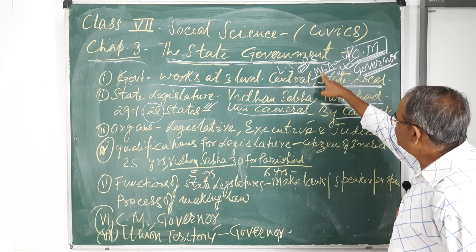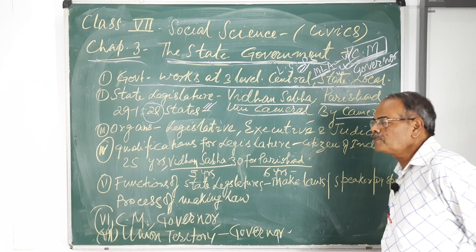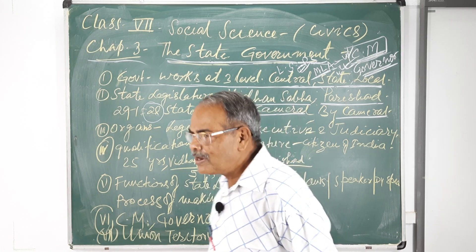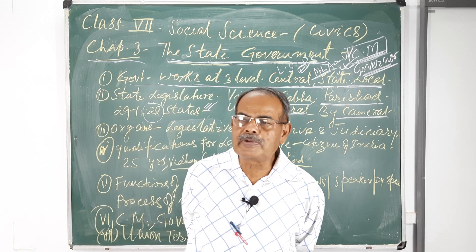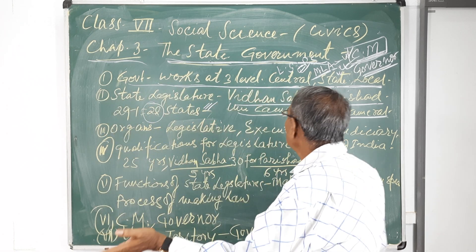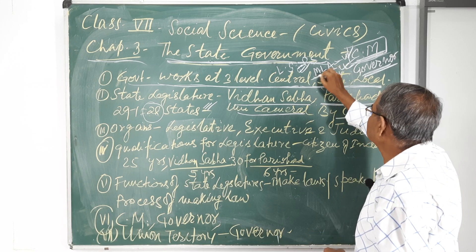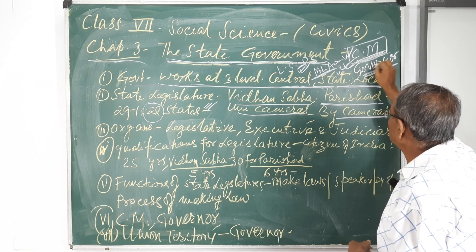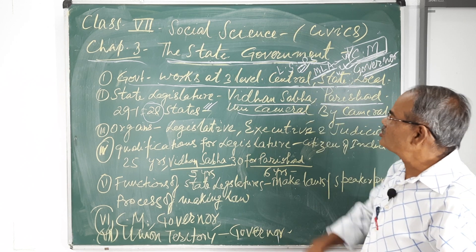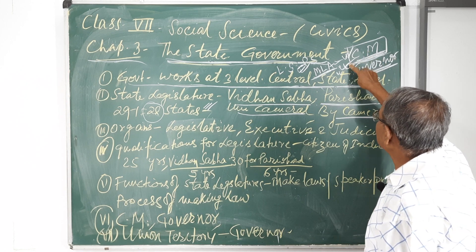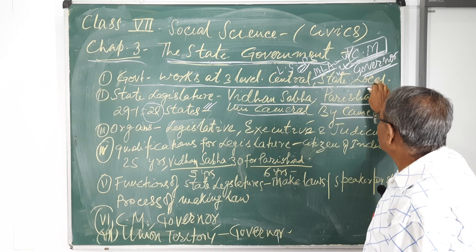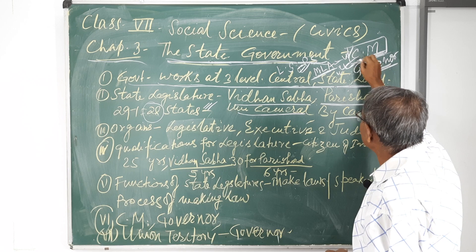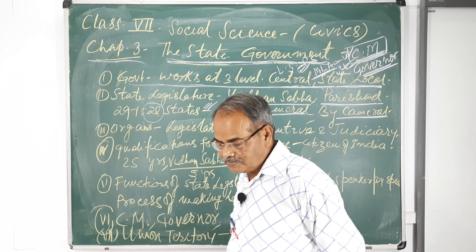So the state has two houses: Vidhan Sabha and Vidhan Parishad. These are there at the state level, similar to the centre. So for the state, there is the MLA and MLC, and two houses are there.